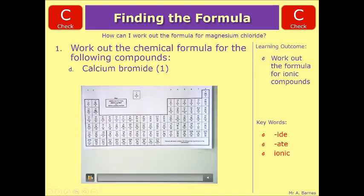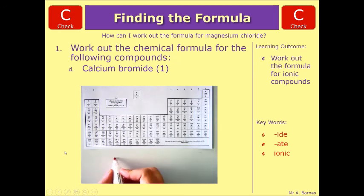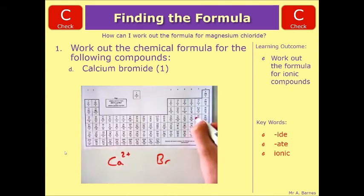Calcium bromide. This one's a lot more straightforward. You have calcium, which is in group 2. And bromine, which is in group 7. So if it's in group 2, it becomes Ca2+. If it's in group 7, it becomes Br-. You do the same thing again. Get rid of the charge. Move the number. And it becomes CaBr2.